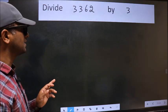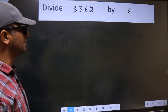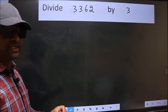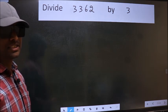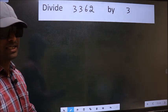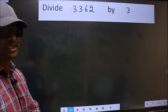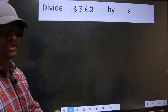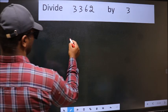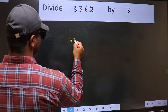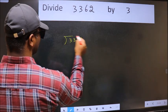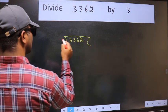Divide 3362 by 3. While doing this division, many do this mistake. What is the mistake that they do? I will let you know. But before that, we should frame it in this way. 3362 and 3 here.